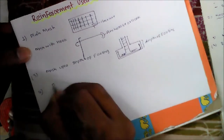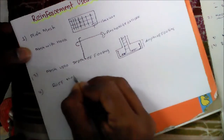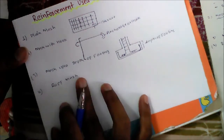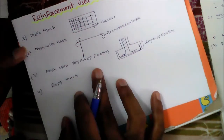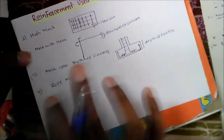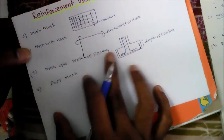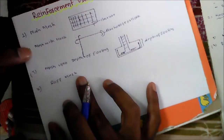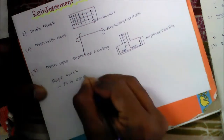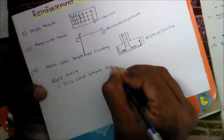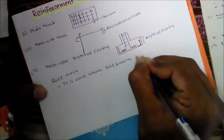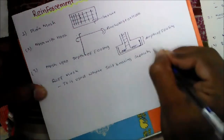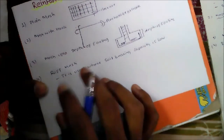The fourth type is wrapped mesh. This is generally provided where the soil bearing capacity is very low. One thing to note: mesh up to depth of footing is provided in isolated footing and step footing. Wrapped mesh is used where the soil bearing capacity is very low, and this mesh is provided in two directions.